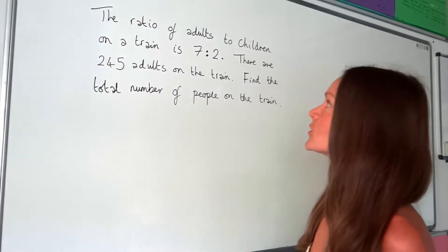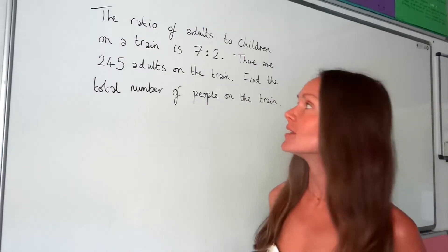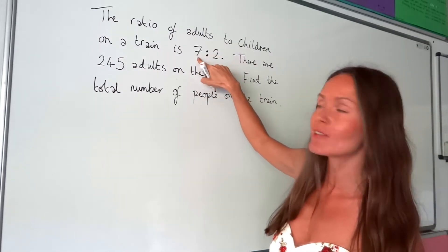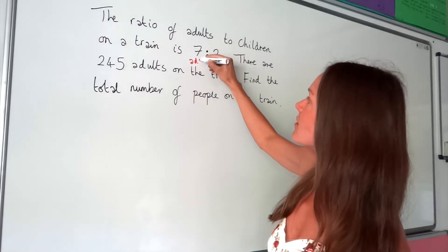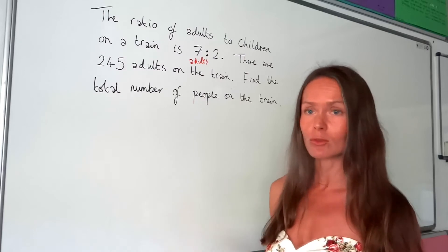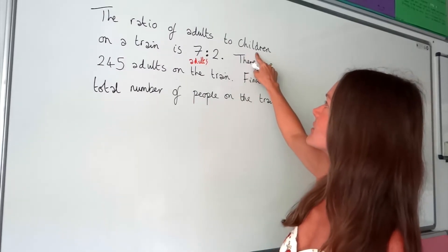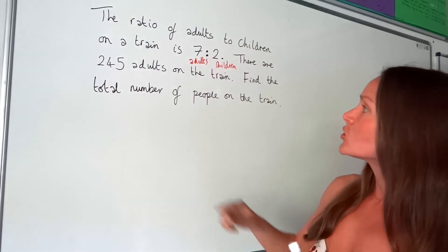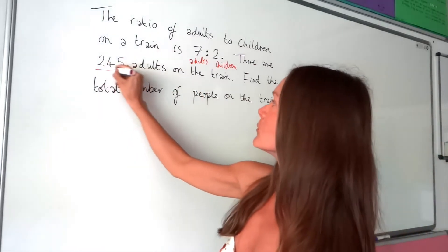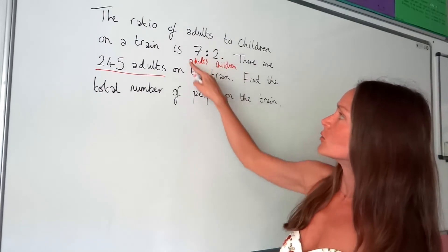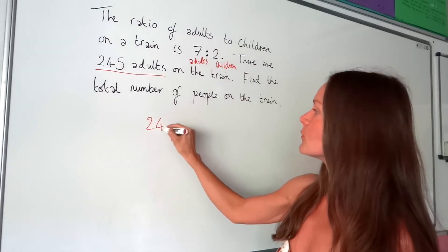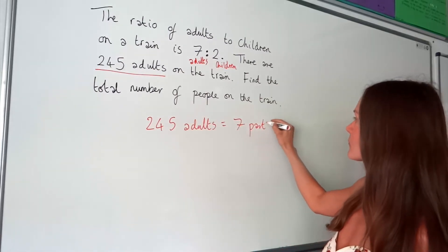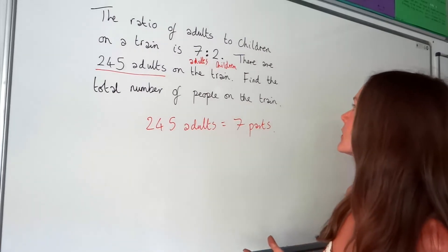In this next question, the ratio of adults to children on a train is seven to two. Because adults is written first, the first number in the ratio refers to adults - there are seven parts worth of adults in the total. Children is written second so children is two parts. There are 245 adults on the train, and looking at the ratio, adults are seven parts, so those 245 adults are equal to seven parts.